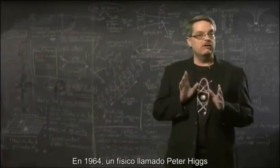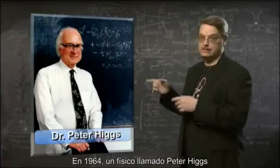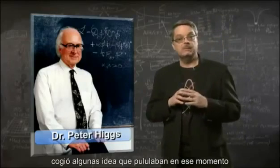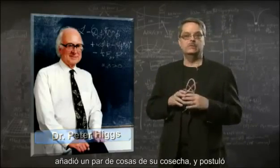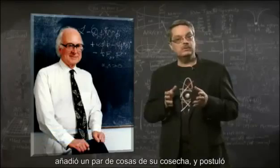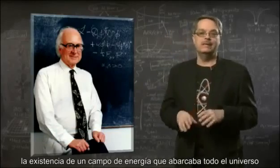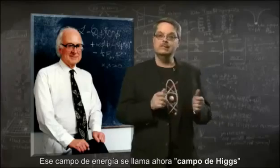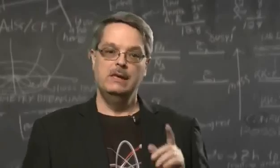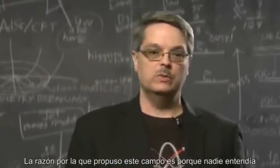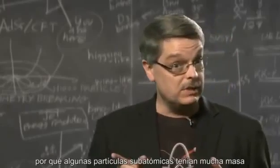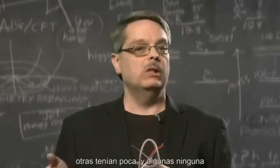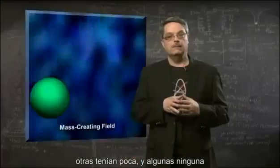In 1964, a physicist by the name of Peter Higgs took some ideas that were floating around at the time, added an insight or two of his own, and proposed that there was an energy field that permeated the entire universe. This energy field is now called the Higgs field. The reason he proposed this field was that nobody understood why some subatomic particles had a great deal of mass, while others had little, and some had none at all.